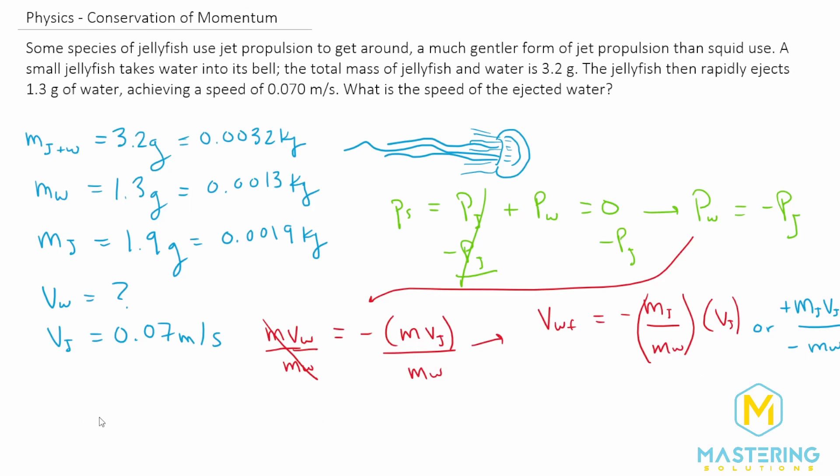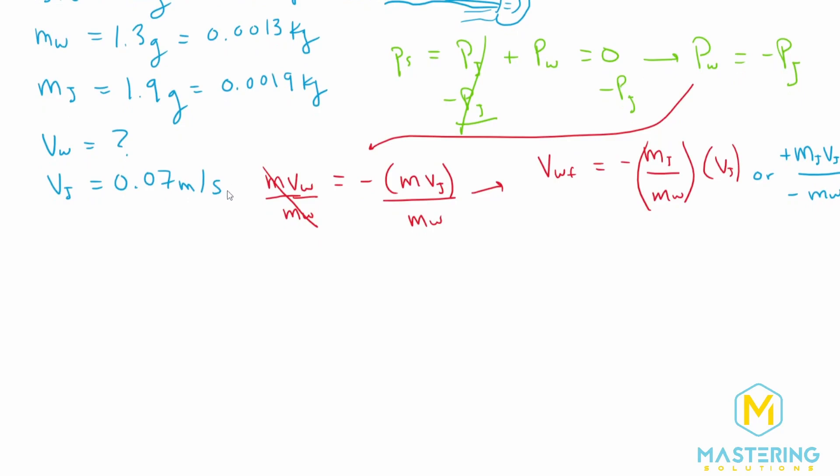So when we plug in our numbers, let's give us a little more room. We have the final velocity of the water is equal to negative 0.0019 kilograms for the jellyfish divided by 0.0013 kilograms for the water multiplied by 0.07 meters per second.